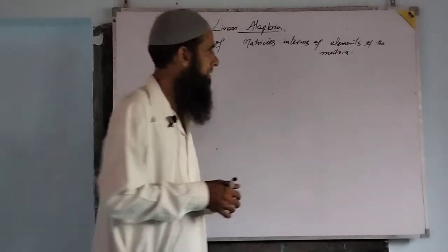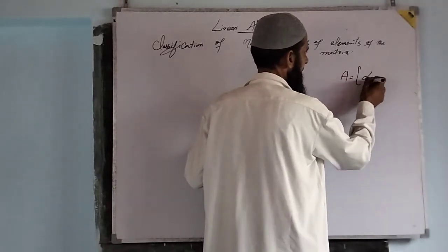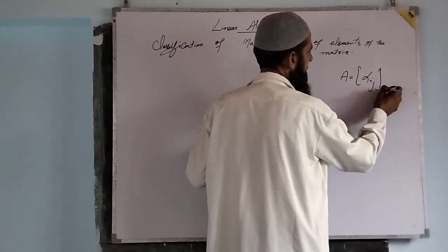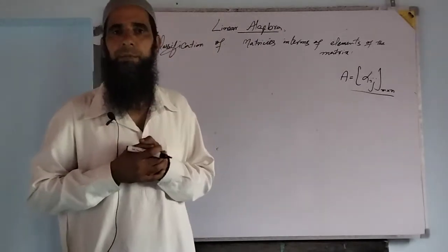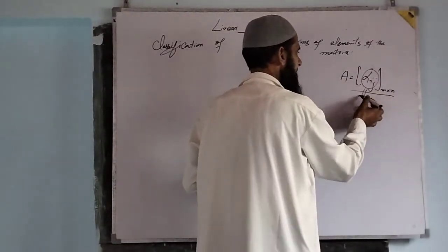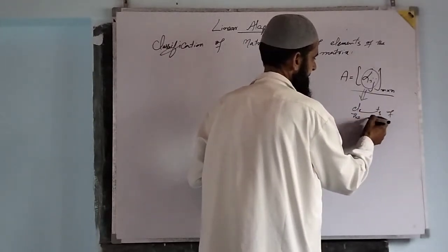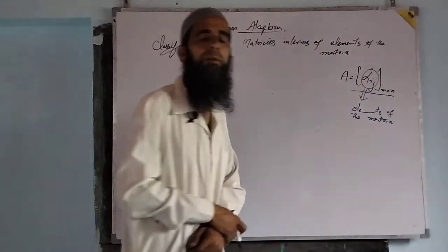If we have a matrix, the general representation of matrix is alpha i j, i from m cross n. This is the general representation of a matrix. Alpha i j - these are the elements of the matrix.